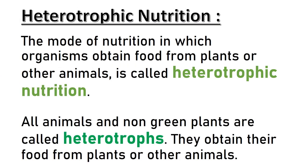Secondly, heterotrophic nutrition. The mode of nutrition in which organisms obtain food from plants or other animals is called heterotrophic nutrition. All animals and non-green plants are called heterotrophs. They obtain their food from plants or other animals.